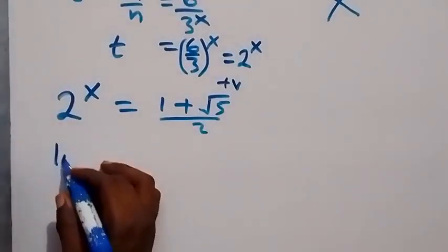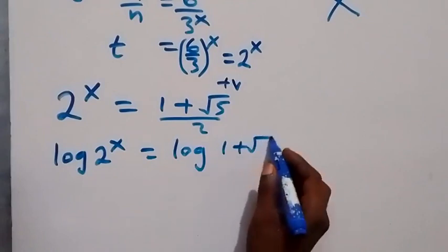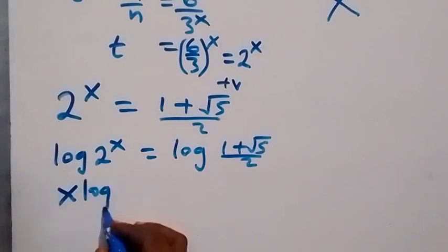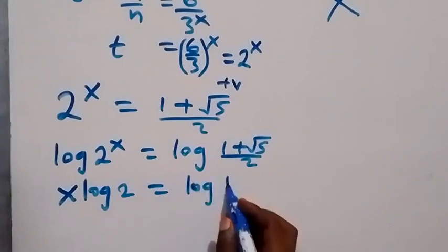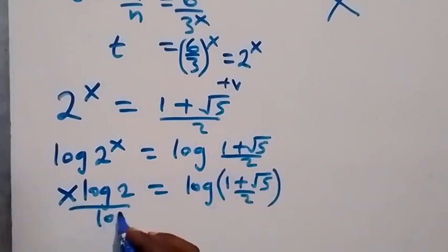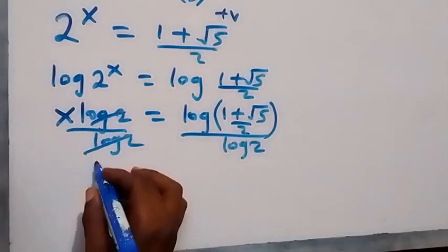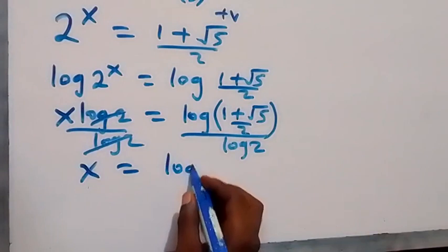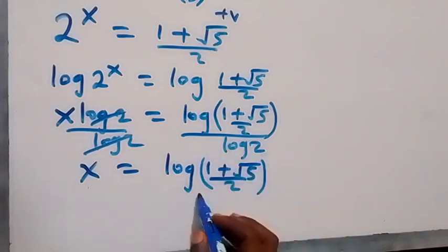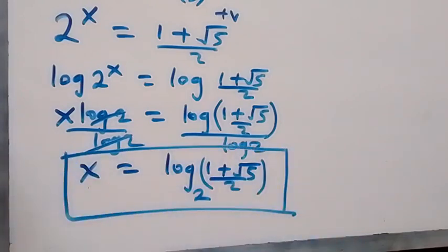We equate 2 raised to power x equals (1 plus root 5) over 2. Taking log on both sides, log(2^x) equals log((1 + root 5)/2), so x log 2 equals log((1 + root 5)/2). Dividing both sides by log 2, and applying change of base, x equals log base 2 of (1 plus root 5) over 2.